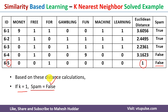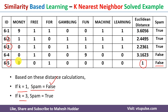With k=3, we find the three nearest neighbors. The nearest is example 5, the second nearest is example 3, and the third nearest is example 2. Looking at their labels: one is false (non-spam) and two are true (spam). Since the majority is true, the new example is classified as spam when k=3.